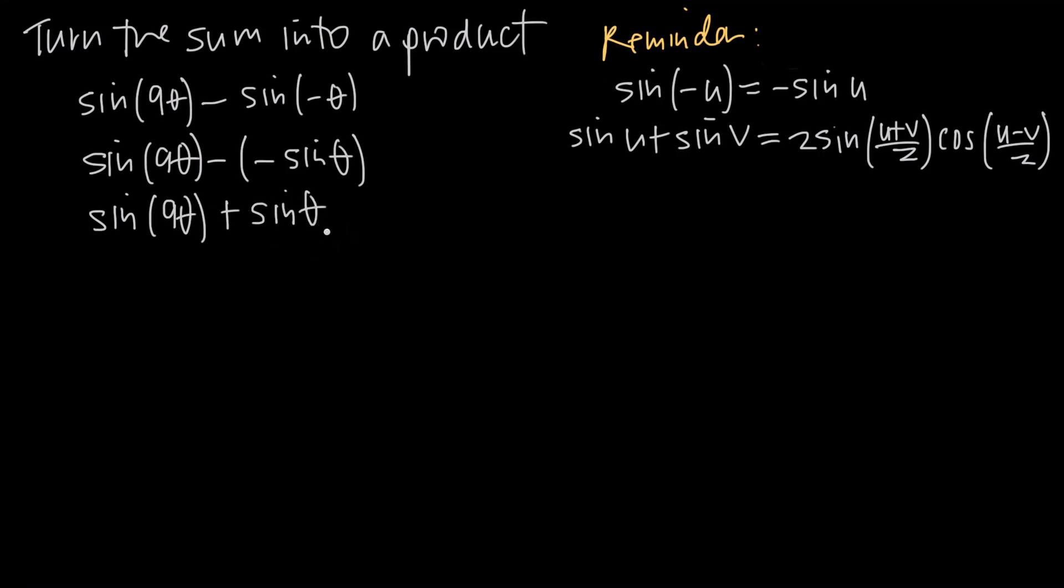Now at least we have two positive angles. And from here, we can use the sum to product identity, which tells us that sine of u plus sine of v is equal to 2 times sine of (u + v)/2 times cosine of (u - v)/2. So notice we've got v in both places here, and we've got u in both places here. So we're just going to follow that formula.